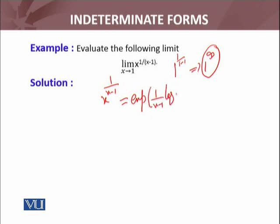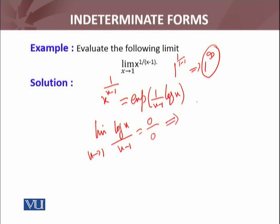x raised to power (1 over x minus 1) को मैं लिख सकता हूँ as exp of [(1 over x minus 1) · log of x]. It means I have to evaluate the limit x approaches to 1 of log(x) over (x minus 1). Log(x) whenever x approaches to 1 is 0, and x minus 1 is also 0, so 0 by 0 form हमारी बन गई.